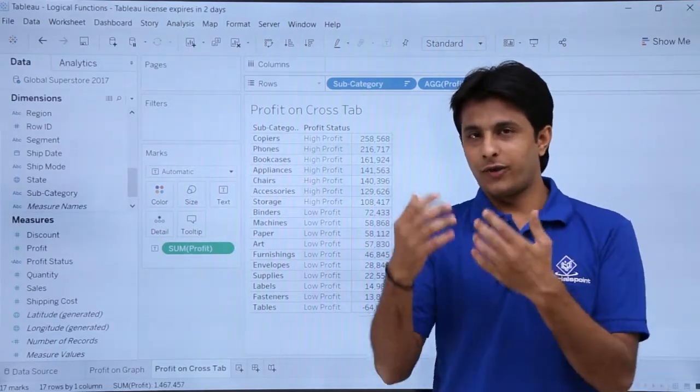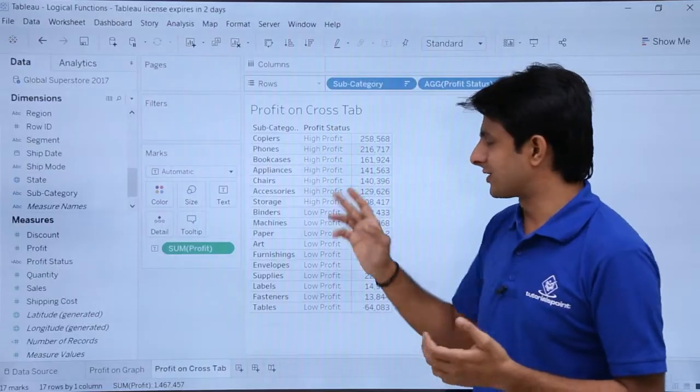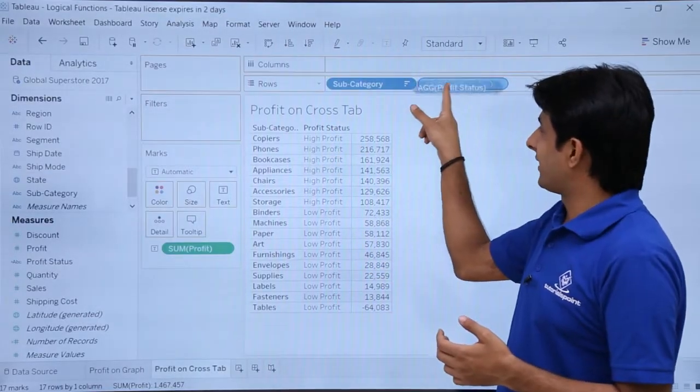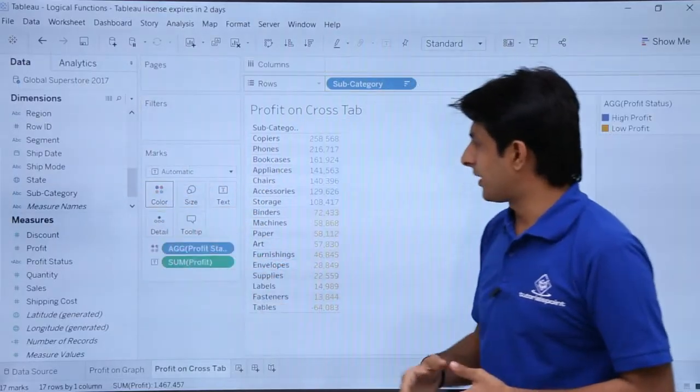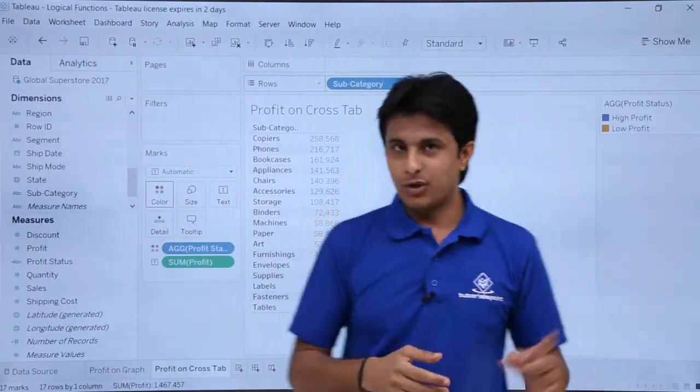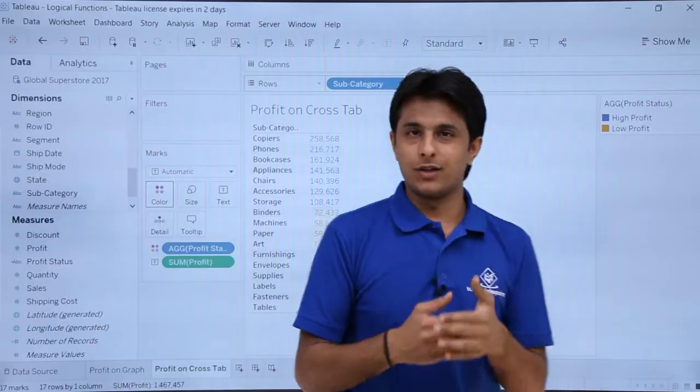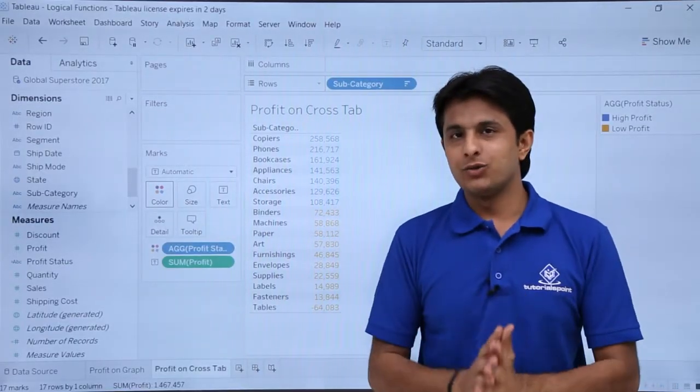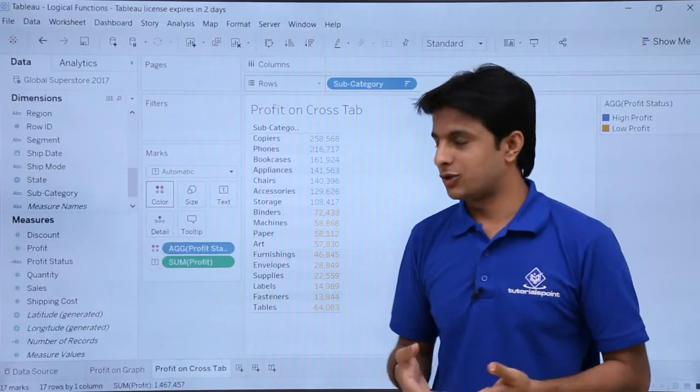If you don't like this high profit, low profit, these are different, you know, the column which is created. You can still use it into the colors part. So pick up this aggregate profit sales and put into the colors part. And you see whatever is in the high profit will be in the blue color. Whatever is in the low profit will be given this, you know, a local itself. So indirectly you can use this in the form of a conditional formatting also.